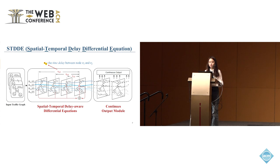In response to these challenges, we propose the STDDE model. It consists of two components. The first is spatial-temporal delay-aware differential equations, where tau_ij is the most important concept, denoting the time delay between node v_i and node v_j. The second component is the continuous output model. We will give a more detailed introduction of these components next.